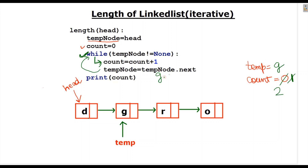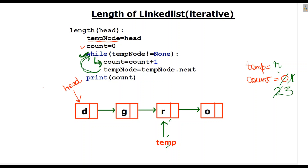Temp node is G, and G dot next is R, so temporary node is at R now. Then again it will go to the while loop and we will check whether temporary node is not equal to None. Yes, it is not equal to None as temporary node is pointing towards R, so it will go inside the while loop and count will get incremented by 1, which is now 3. Temporary node is R, and R dot next is O, so temporary node is at O. The last node is O, and the last node's next is always None.